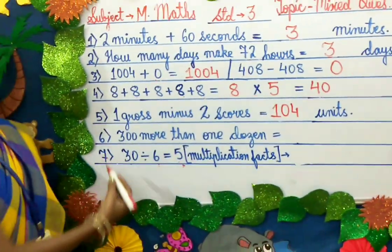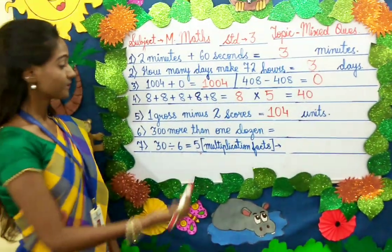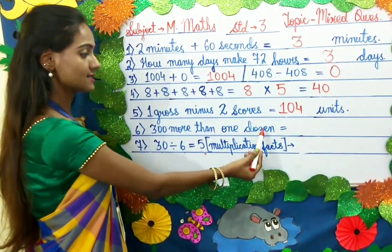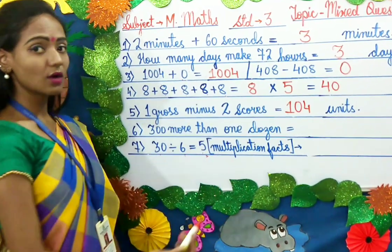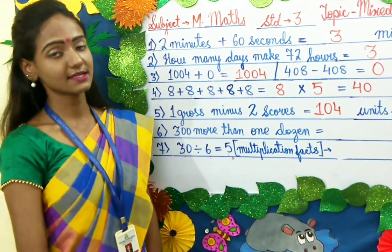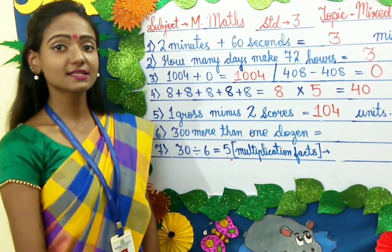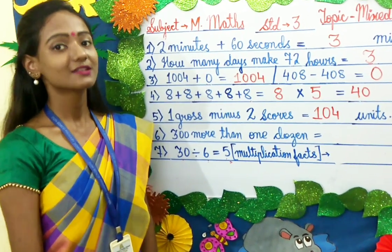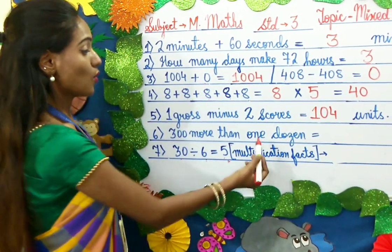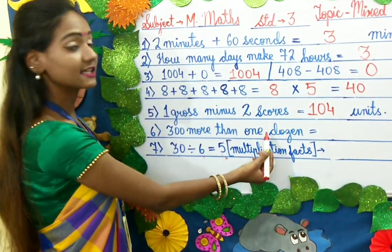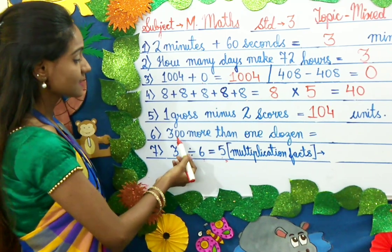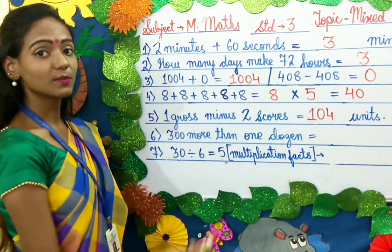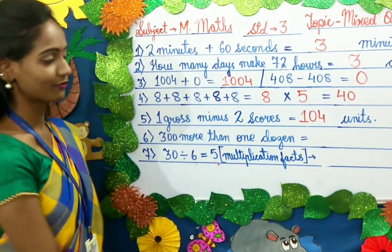The sixth question: 300 more than 1 dozen. 1 dozen equals 12 units. So 12 plus 300 equals 312.